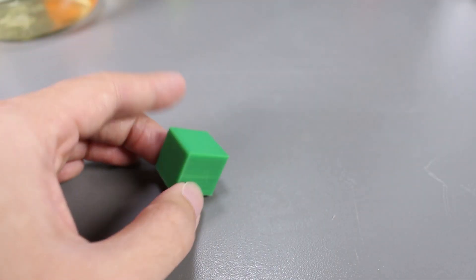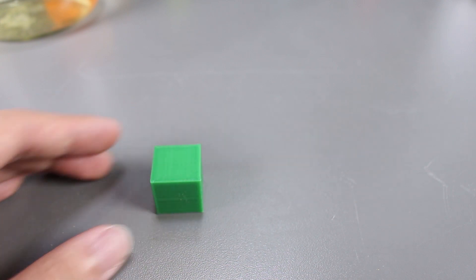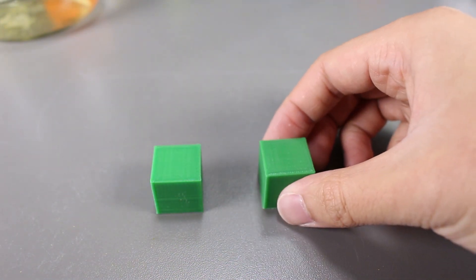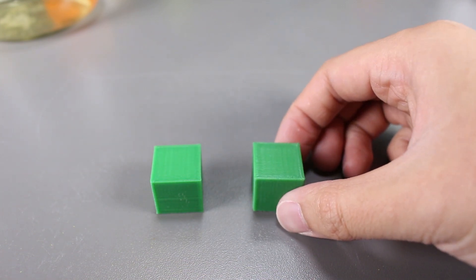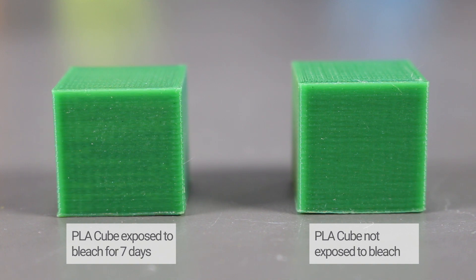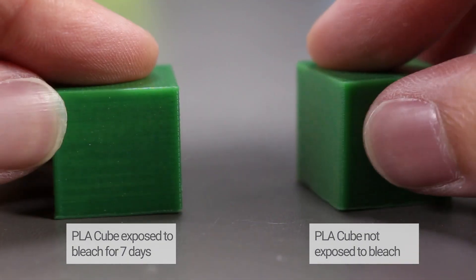I can still see the layers and it's not smooth. Here's a side to side comparison to a cube that wasn't exposed to bleach for 5 days. Now that you put it beside each other, they look identical. I don't see any difference between the two after all.